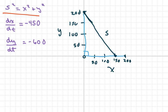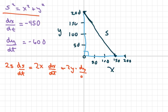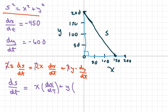So I'm going to take the derivative of this and you get 2S times the derivative of S with respect to time equals 2X times the derivative of X with respect to time plus 2Y times the derivative of Y with respect to time. So if I solve for the derivative of S and divide everything by 2S, it's going to be: the derivative of S with respect to time equals X times the derivative of X with respect to time plus Y times the derivative of Y with respect to time, all divided by S.